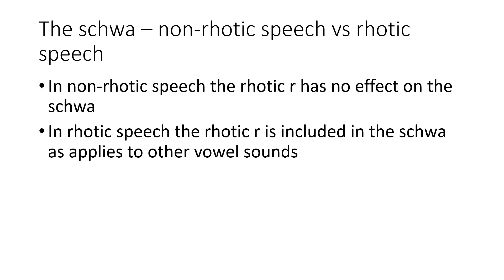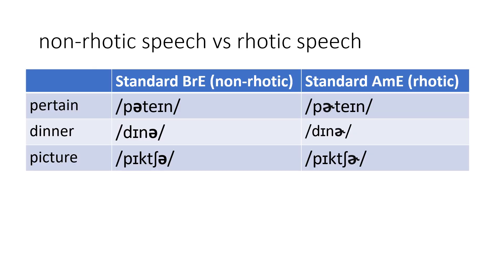As we know from the Rhotic R 1 video, in non-rhotic speech, the rhotic R has no effect on the schwa which comes just before it in written words. In contrast, in rhotic speech, the rhotic R is included in the schwa sound which comes just before it, as with all vowel sounds — so we have the rhotic schwa in rhotic speech. Now let's compare a few words where the schwa sound comes just before the rhotic R in standard British English and in standard American English. 'Pertain' in standard British English would be pronounced without the rhotic R, while in standard American English it would be pronounced with the rhotic schwa.